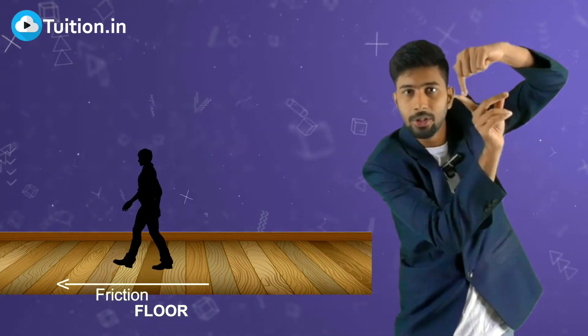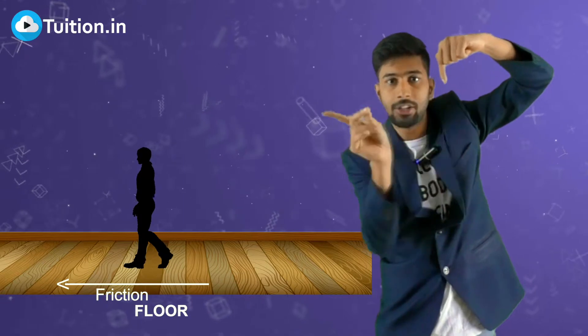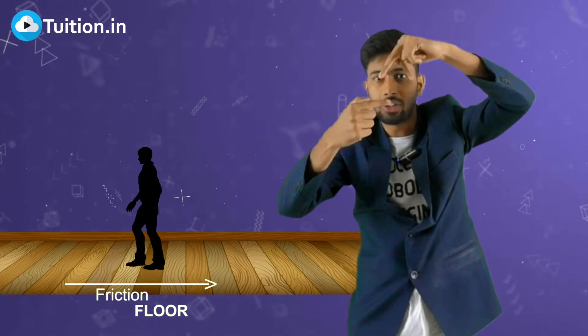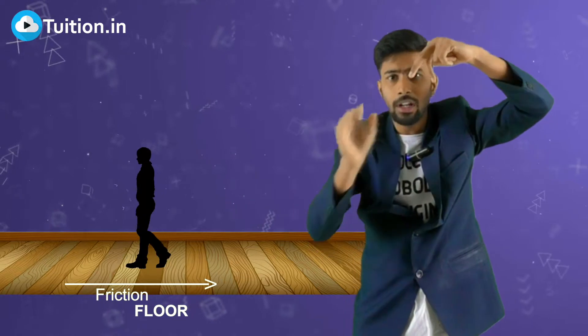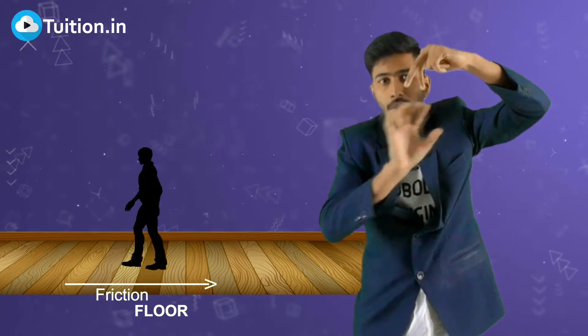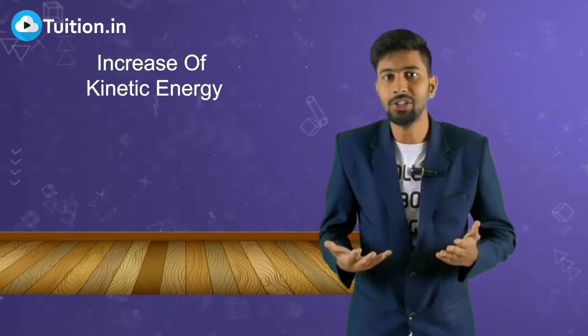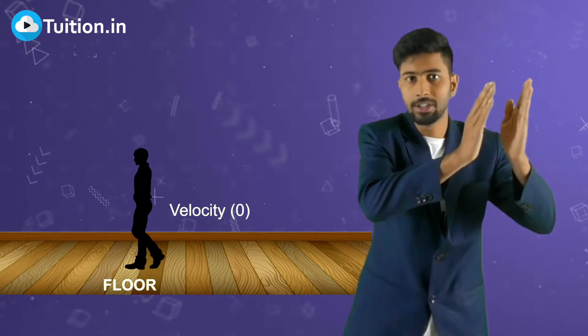When you put your back leg forward, friction pushes you in the forward direction. But the moment you put your front leg down, friction pushes you in the backward direction. So in one complete cycle of walking, friction has helped you move ahead but it didn't help you accelerate.